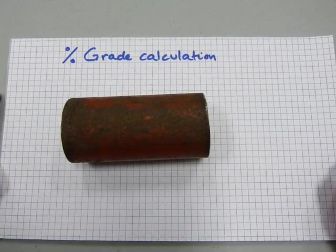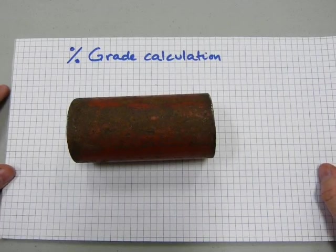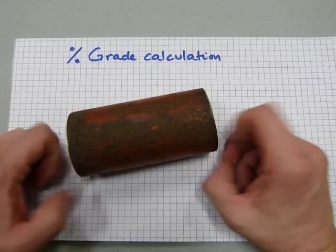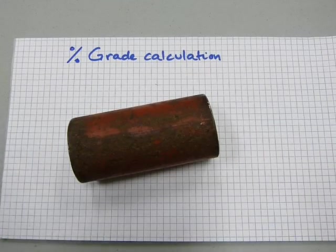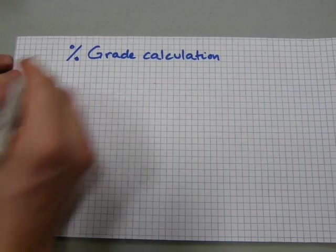I'll show you how to do grade calculations using percentages. Pipes need to slope, particularly for drain, like so. Sometimes the grade of a pipe is given in percentages, like 2%. Let's work with that.